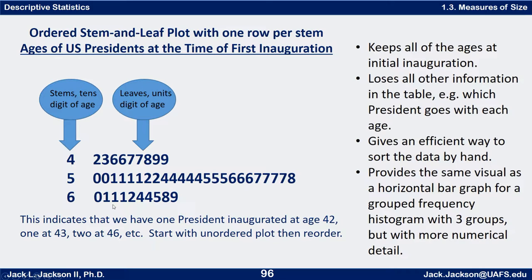Then we'd spread it up to the 50s and 60s as well. You could also divide it up into five lines per stem, since five is a factor of ten, so you'd have 40 and 41 on the first line, 42 and 43 on the next, and so forth — two possible digits per row this way. See if you can take the one-row-per-stem version and divide it into two rows per stem, and then also do it again with five rows per stem. Press pause now.